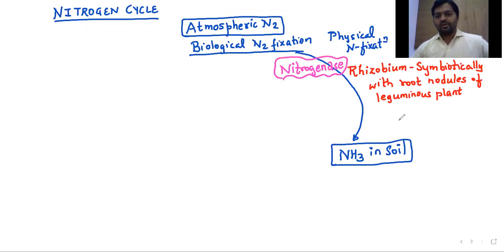This process is basically nitrogen combining with 8 protons plus 8 electrons plus 16 ATP. So it's a highly energy expenditure process to form two molecules of ammonia plus hydrogen plus 16 ADP plus 16 inorganic phosphate.